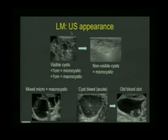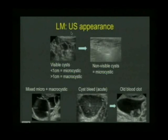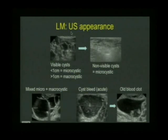Sometimes the cysts bleed, and the fluid becomes much more hyperreflective because of the blood, which over time forms a retracted clot against the wall of the cyst. When you see microcystic disease, you can't always on ultrasound see the cysts because they are actually too small, and what you see are sheets of echogenic or hyperreflective tissue.